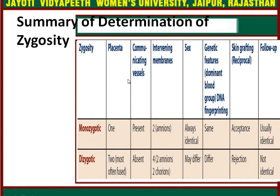In monozygotic twins, the placenta will be one, communicating vessels will be present, and the intervening membranes will have two amnions. The sex is always identical, and genetic features — meaning dominant blood group and DNA profile — will be the same. Skin grafting is accepted and follow-up is usually identical.